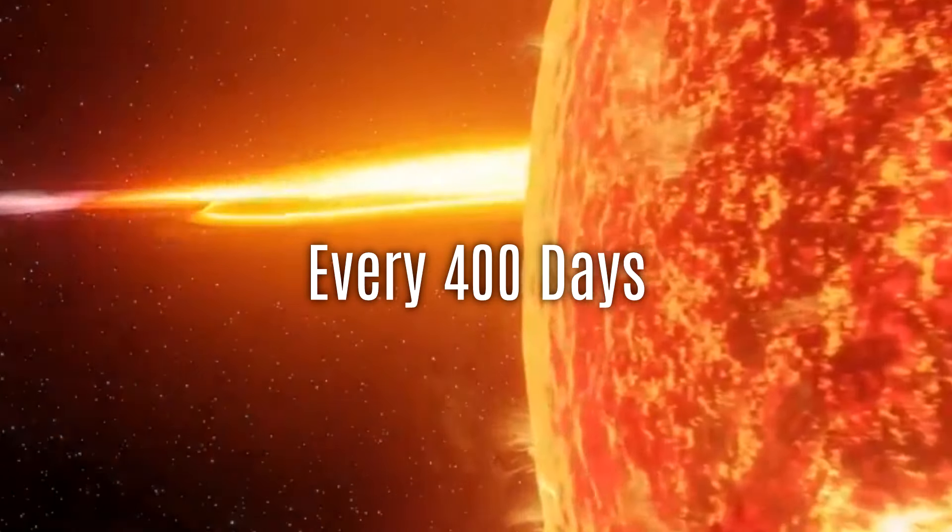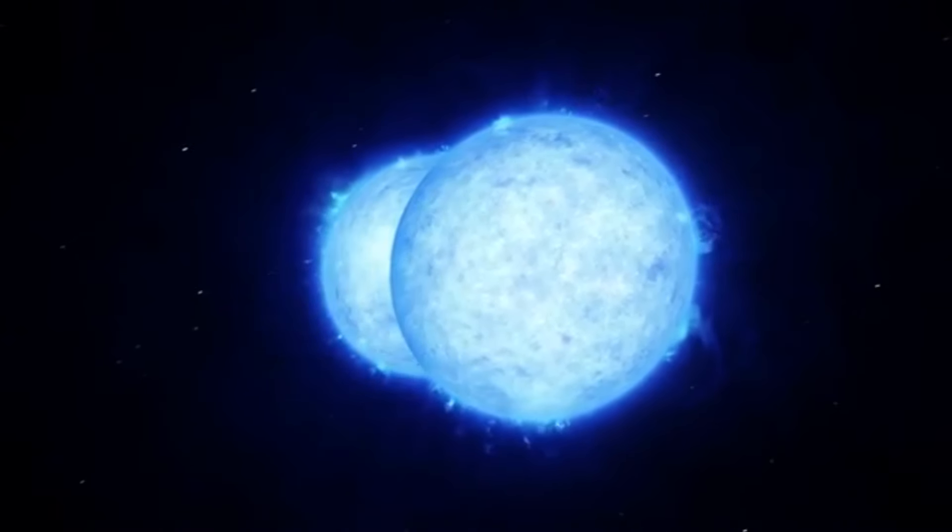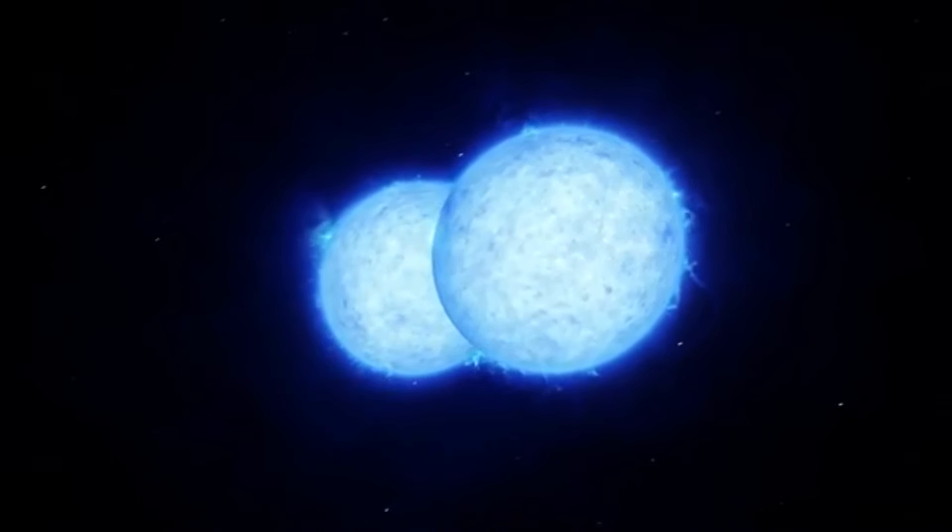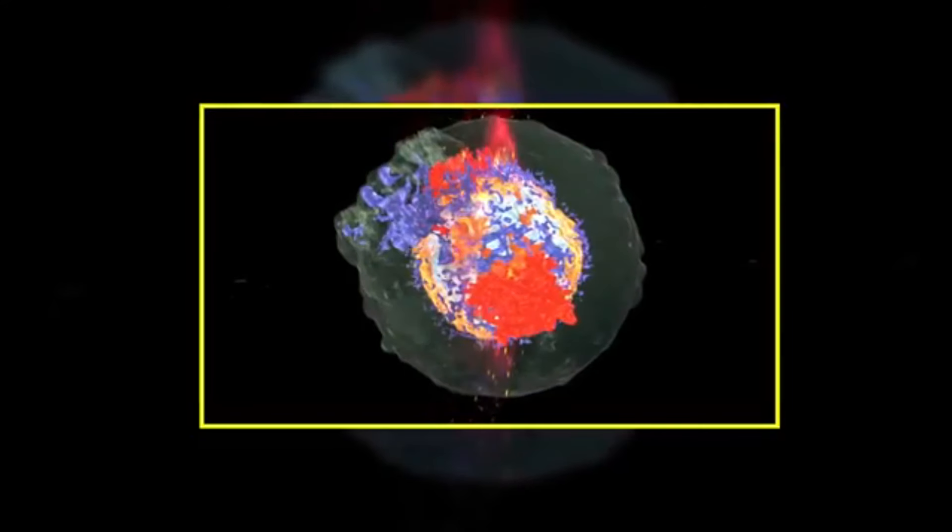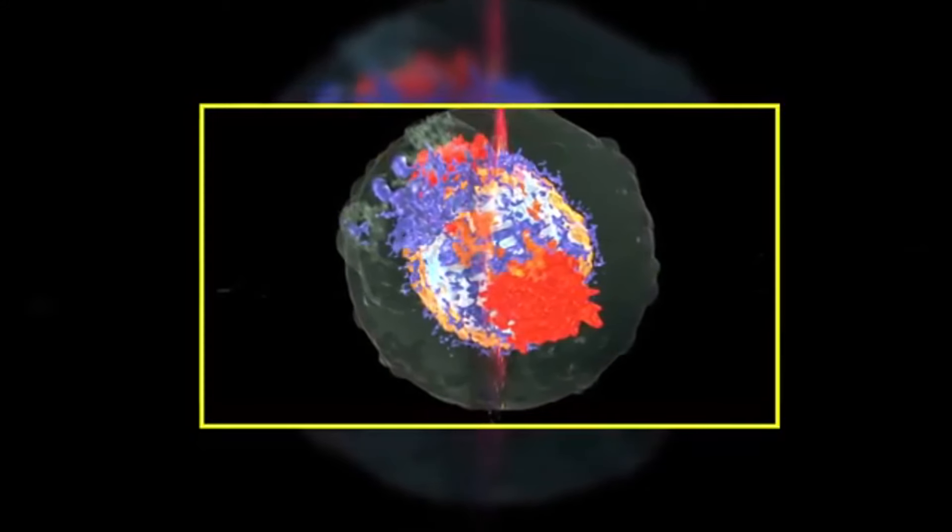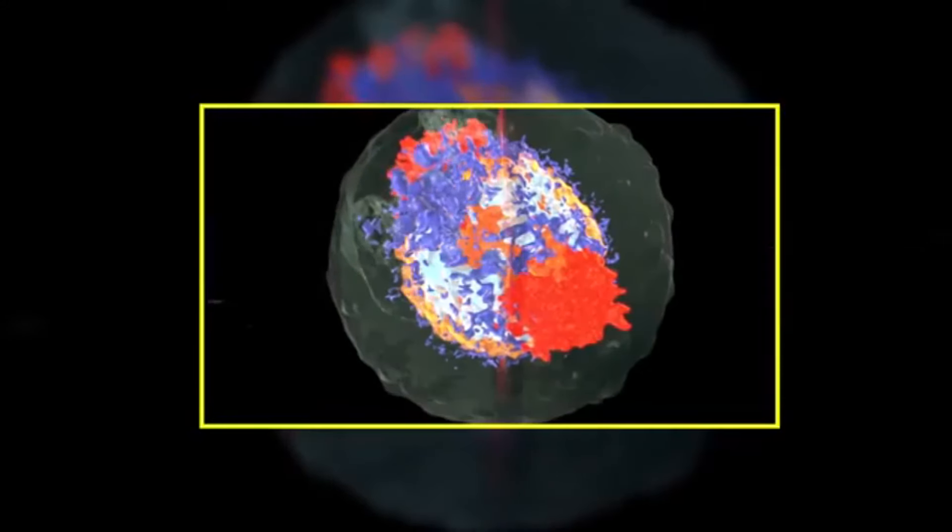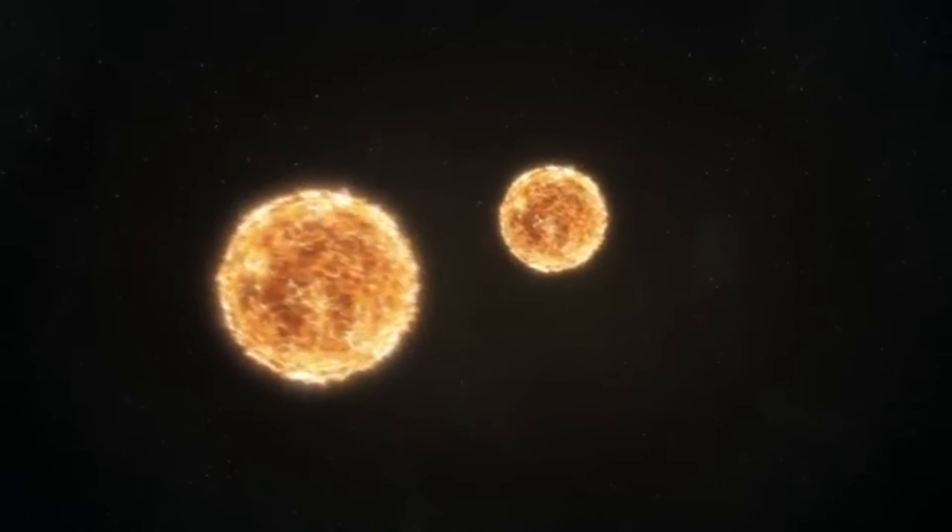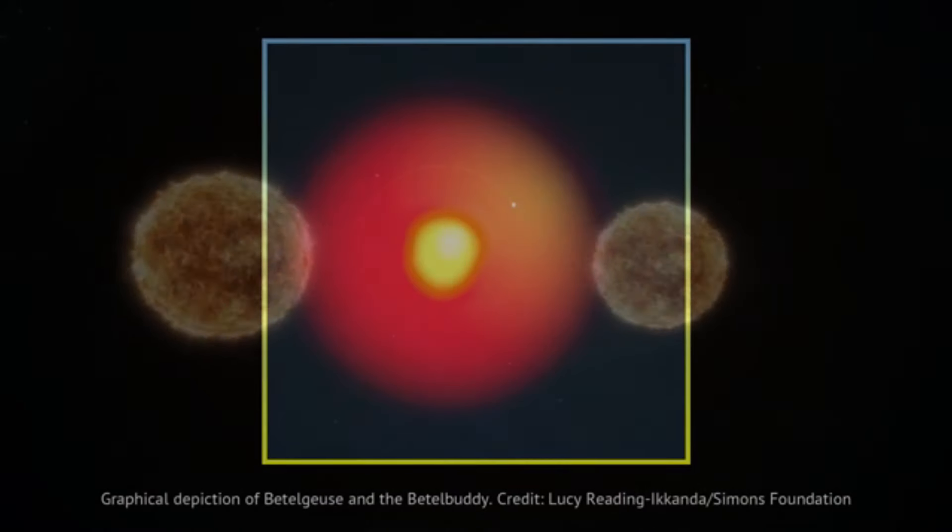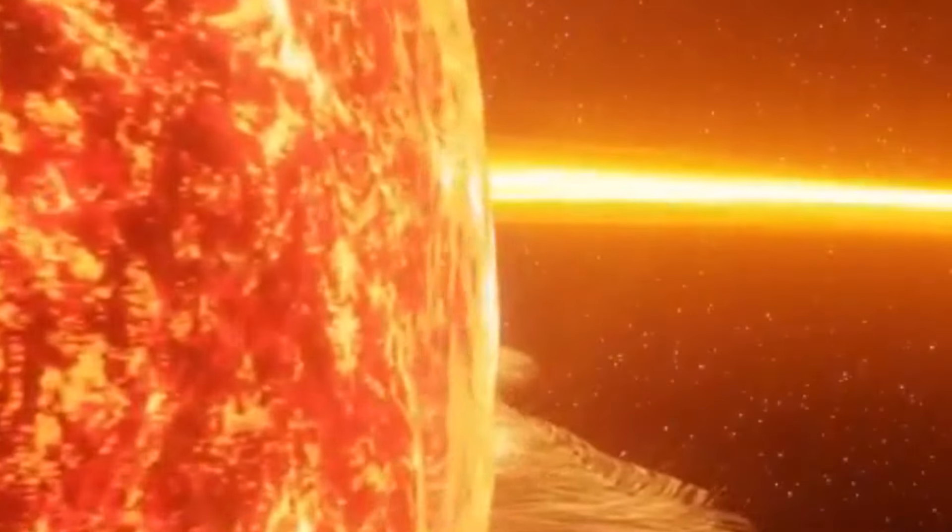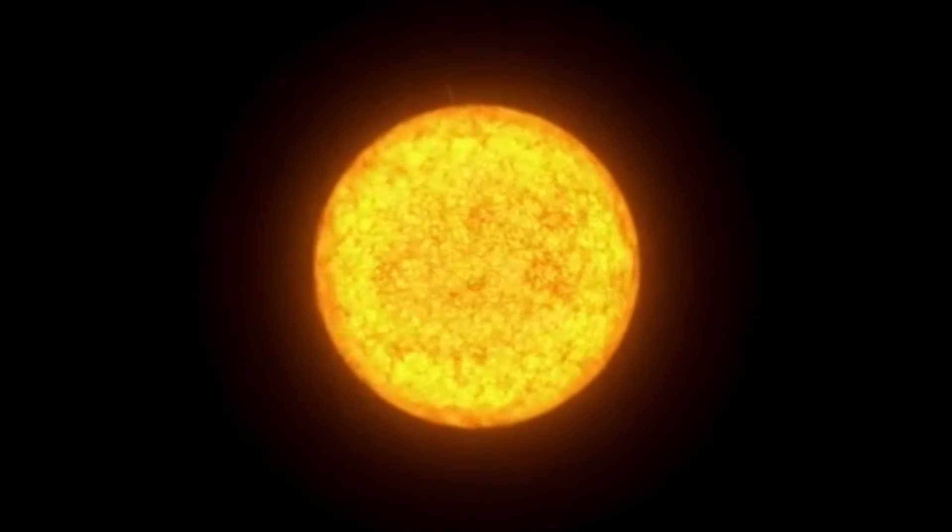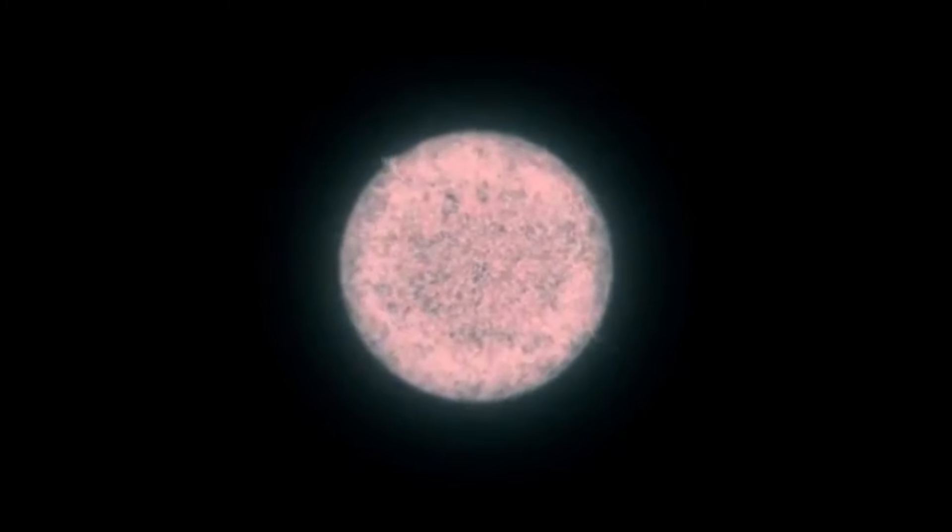During this phase, Betelgeuse also undergoes cyclical expansions and contractions approximately every 400 days. These periodic fluctuations are a normal aspect of its life cycle, reflecting the complex interplay of forces within the star. Experts believe that it was the combination of vigorous convection currents and these expansion cycles that resulted in a recent plasma eruption that was significantly more intense than typical. Specifically, the eruption was two to three times stronger than usual, highlighting the dynamic and sometimes violent nature of a red supergiant's life as it nears its end.